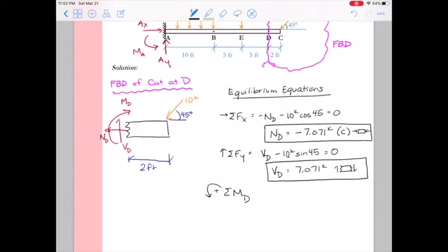Lastly we'll sum the moments at D. I'll take counterclockwise to be positive for my moment equation, so that's going to give me the negative moment at the cut D. My axial force and shear intersect that point so they don't contribute to the moment, and then all I have is the vertical component of the force, 10 kips sine 45, times the distance away from point D, which is 2 feet. We'll consider that the horizontal component creates a negligible moment. We'll assume the beam is thin, so there's really no additional moment from the horizontal component.